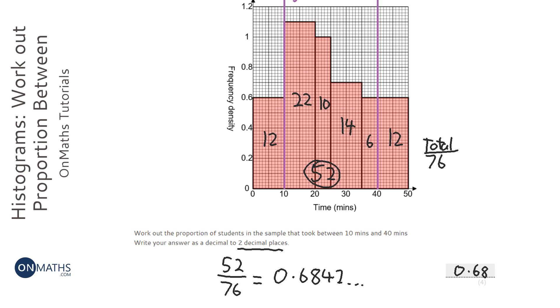Now what you could have done is worked out the areas of each of the bars to get something that's maybe proportional to the frequency and then done it that way. But if you can count the squares, it's just much easier and quicker.